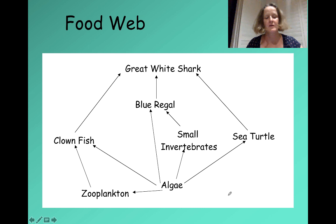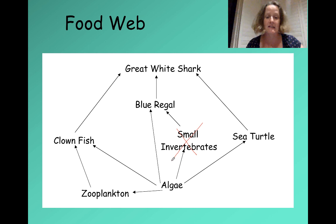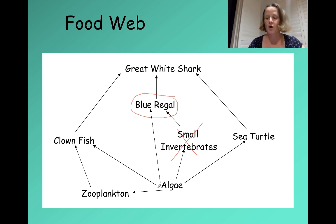Having a food web means you can have a little bit of stability in an ecosystem. The more complex a food web is, the more stable the populations of organisms supported by it. For example, if small invertebrates all died because of a disease, the blue regals may not be affected — although they can no longer eat the small invertebrates, they can eat the algae, so their food source hasn't gone, and hopefully the blue regal population stays stable.